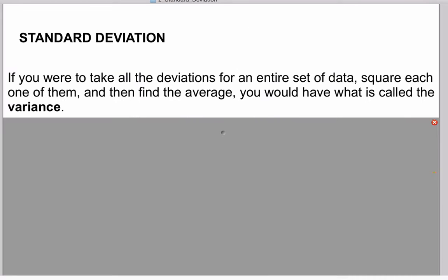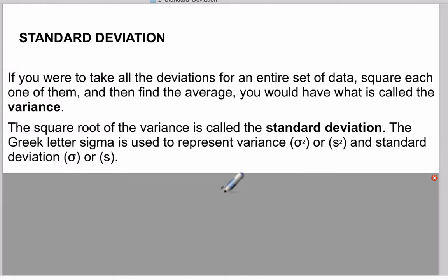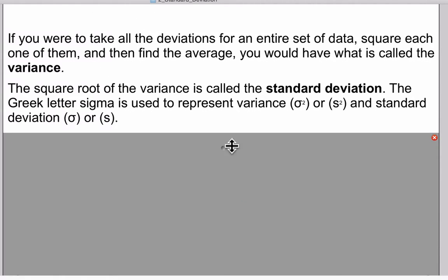Now I'm going to give a definition and we're moving into a term called standard deviation, which you're probably familiar with. If you were to take all the deviations for an entire set of data and square each of these deviations, then add them up and find the average, you would have what's called variance. The square root of the variance is called the standard deviation.